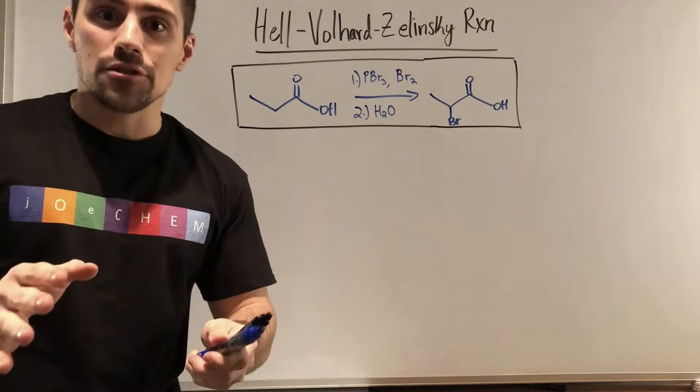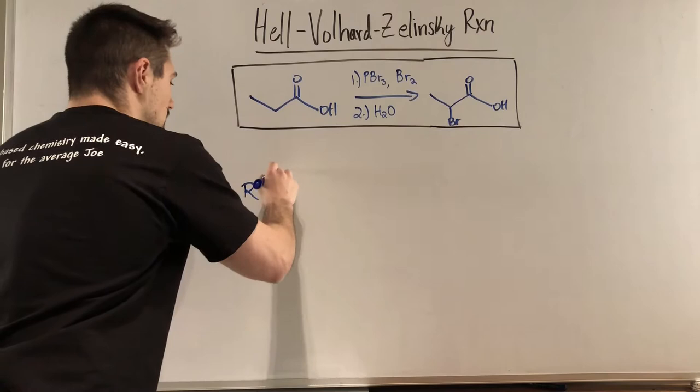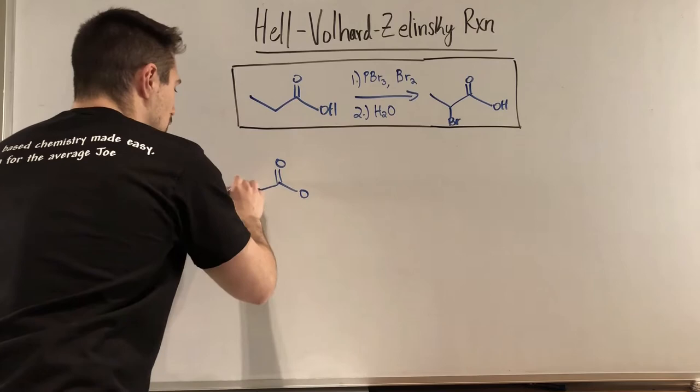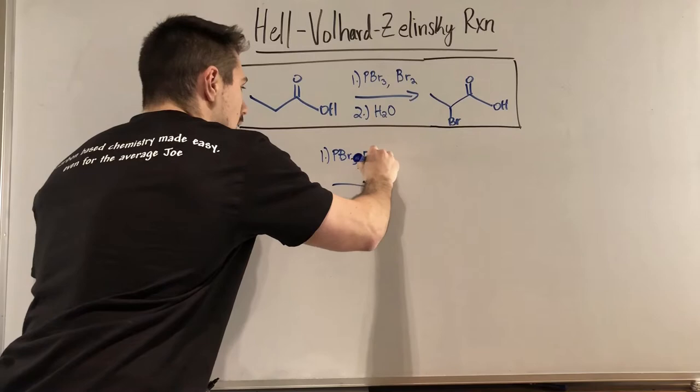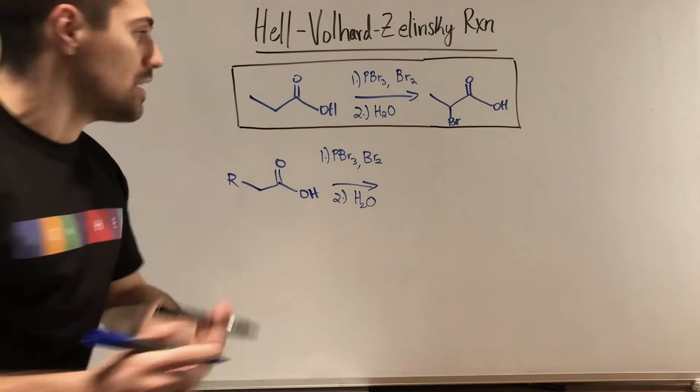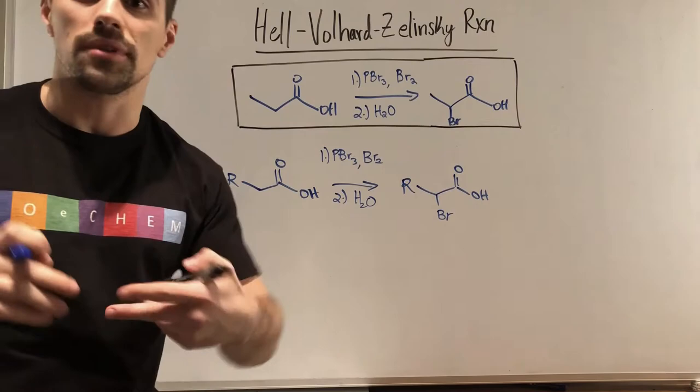So this reaction, what it will basically do is if you have a carboxylic acid, so I just chose a simple three carbon carboxylic acid here, but I might as well have done this. And actually what I need to expose is the alpha carbon because that's where something interesting is gonna happen right here. So when you do this reaction if you toss in a first step of PBR3 and diatomic bromine and then a second step of water, what you will observe is that you will place a bromine on the alpha carbon on your carboxylic acid.